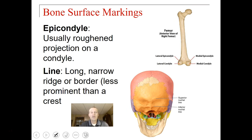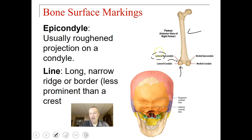An epicondyle is a rough-surfaced projection on a condyle. Here on the femur we have a smooth condyle surface, and above that smooth surface is a rough projection called an epicondyle. You can have a lateral epicondyle if it's away from the midline of the body, or a medial epicondyle if it's toward the midline. We're using directional terms in addition to surface marking terms to indicate location.